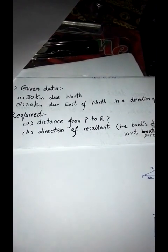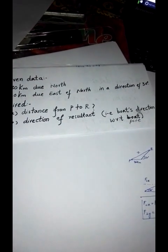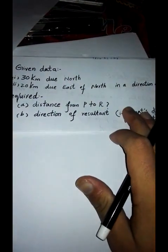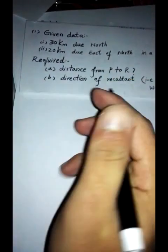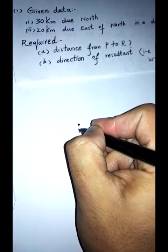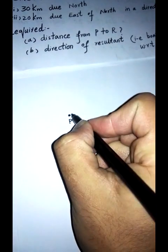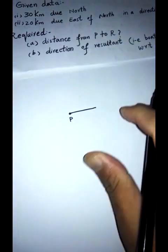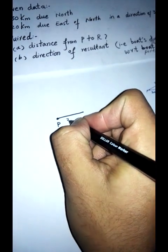The boat turns with an angle of 30 degrees and it reaches a point R. So here we have a situation where a boat starts from a port, travels 30 kilometers north.